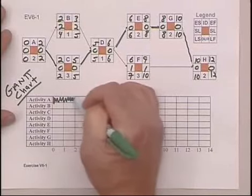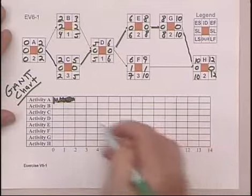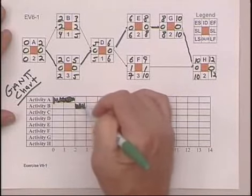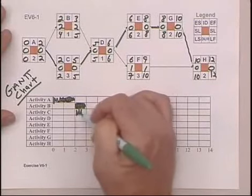Then B can start which has a duration of one, and C can start. Notice how the bars are representing the time frame given this timeline.